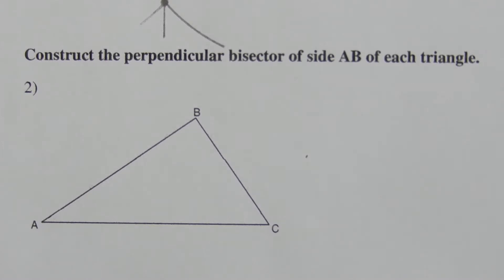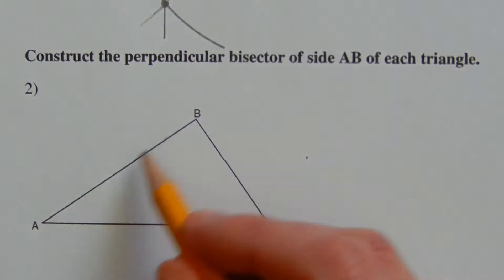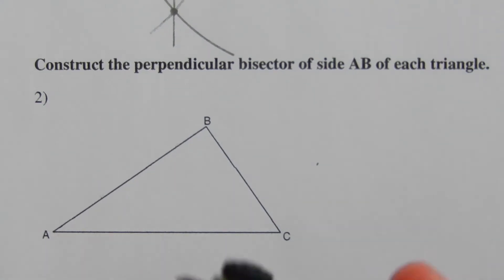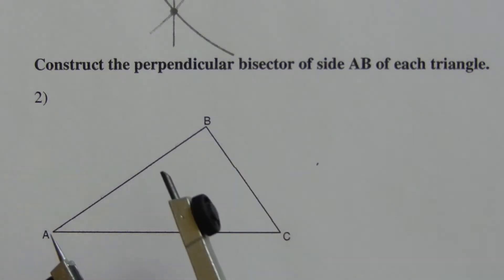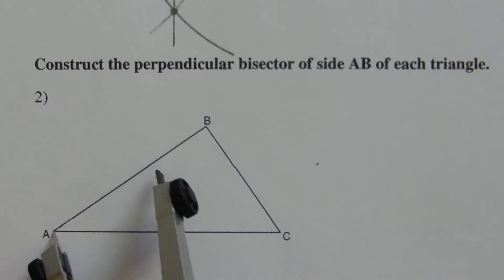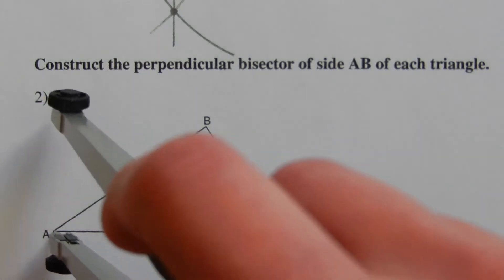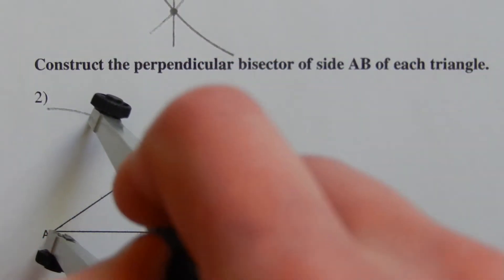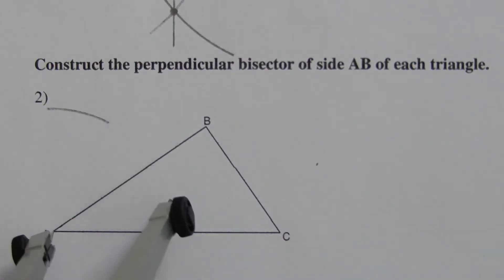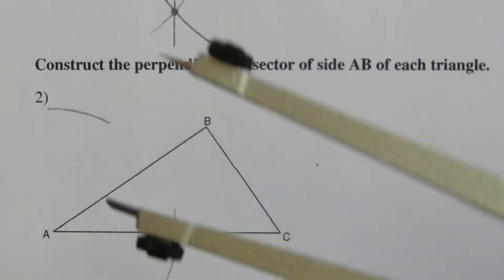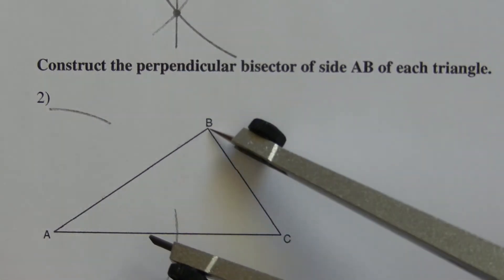Number two says to construct the perpendicular bisector of side AB in the triangle. Here we have side AB, so again we're going to take our compass and move it until it's a little more than halfway. Putting that on endpoint A, we're going to do a tick mark to one side of line AB and then an arc to the other side.